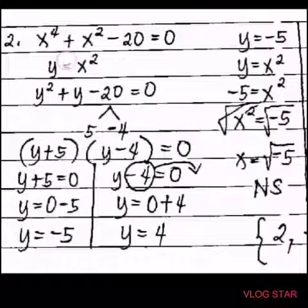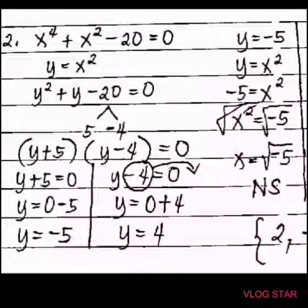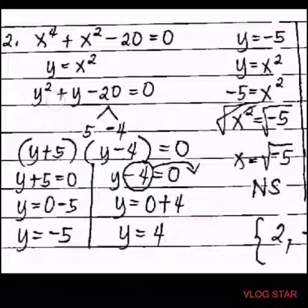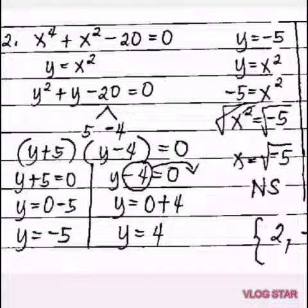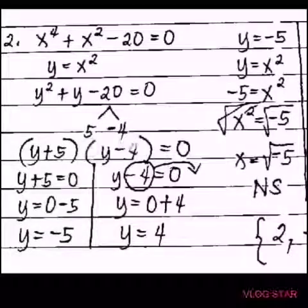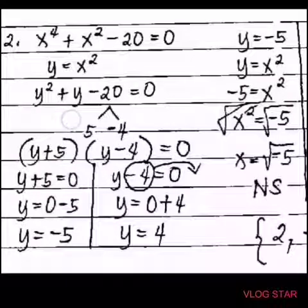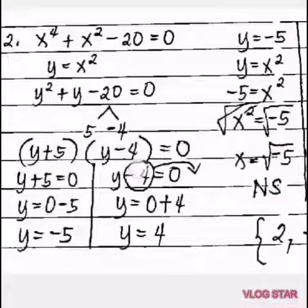How about if the given is x raised to 4 plus x squared minus 20 equals 0? This is another equation transformable into a quadratic equation. Let y equals x squared. Since x raised to 4 is x squared squared, it becomes y squared automatically. So the equation becomes y squared plus y minus 20 equals 0. Using factoring, the factors of negative 20 are 5 and negative 4, since 5 times negative 4 is negative 20 and 5 plus negative 4 is positive 1 — giving the middle term y. So we write the quantity y plus 5 times the quantity y minus 4 equals 0.